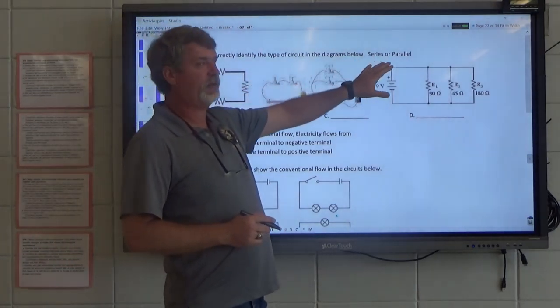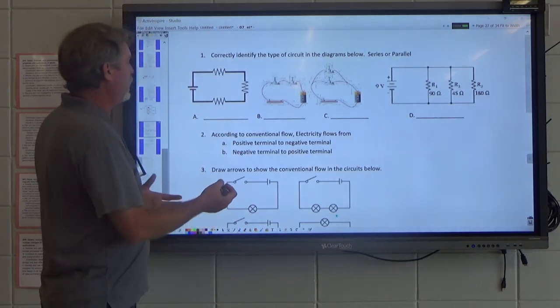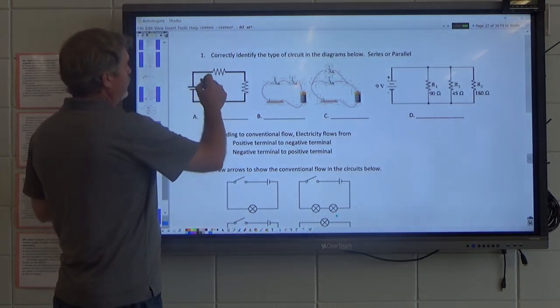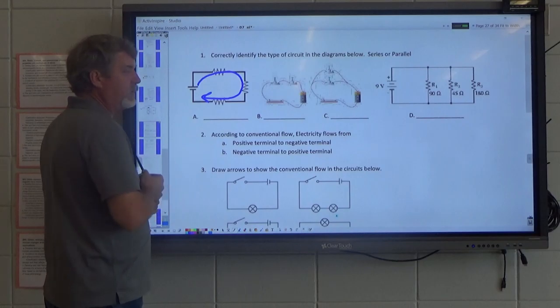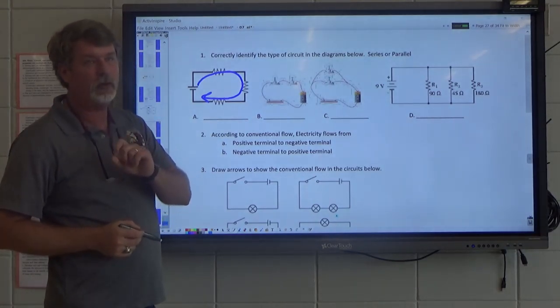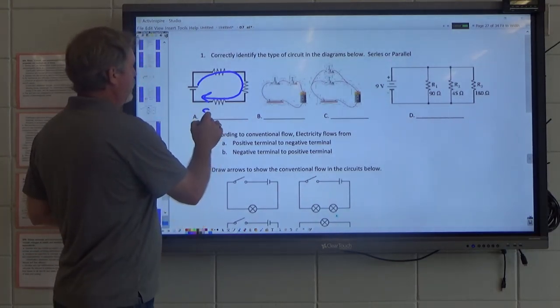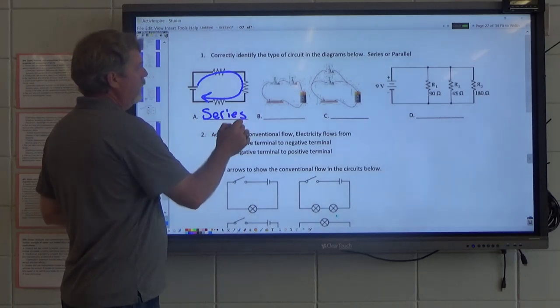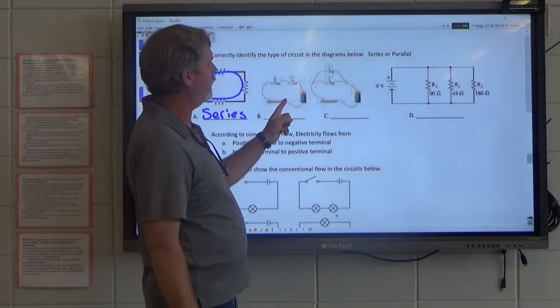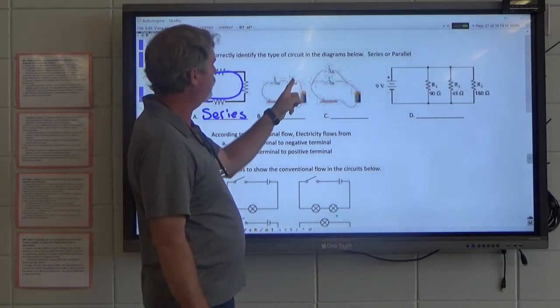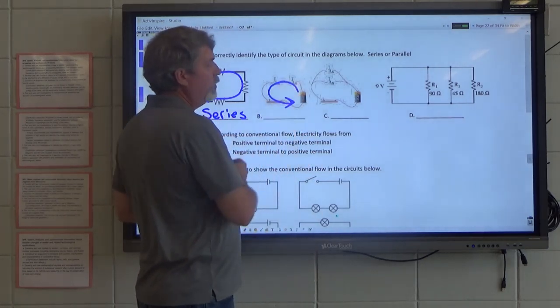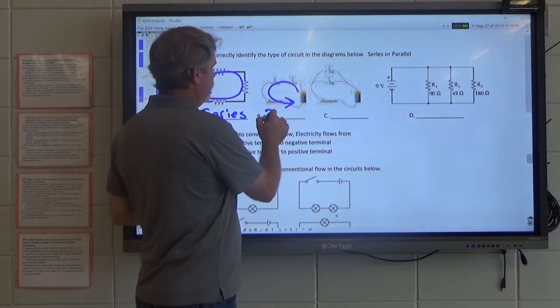Correctly identify the type of circuit as series or parallel. What I like to do is just draw my flow. This has got to flow through those wires in that direction. There's only one flow or one current. That is a series. Here we have a battery and a couple of lights. Still only one flow, so it is a series.